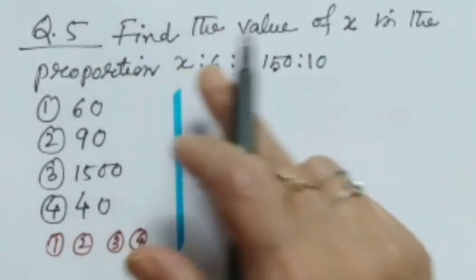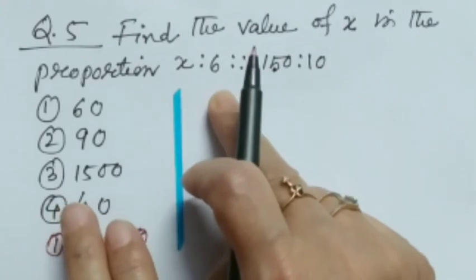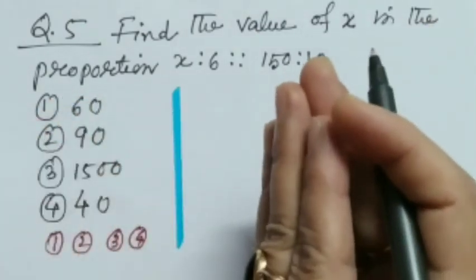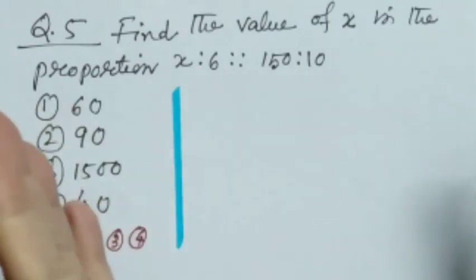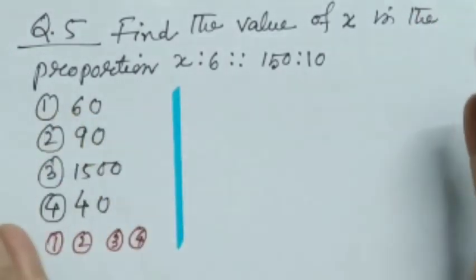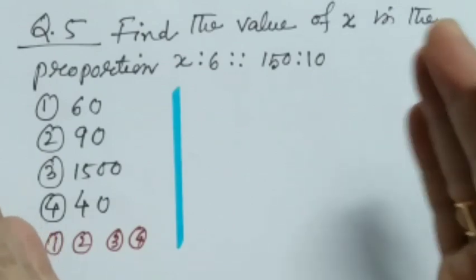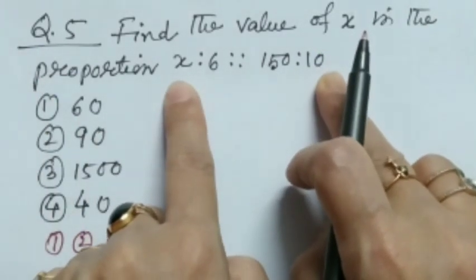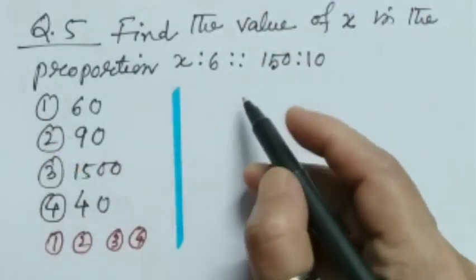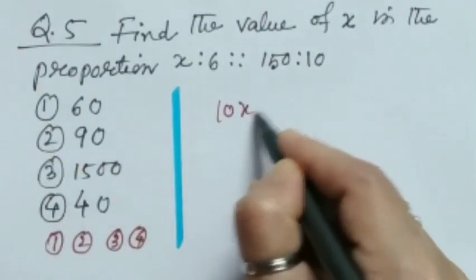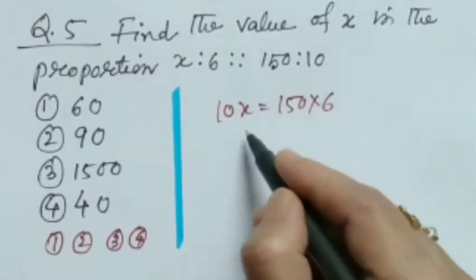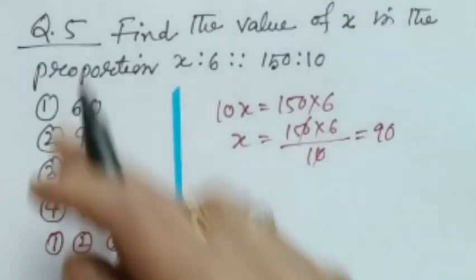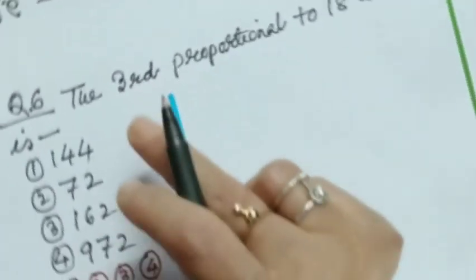Question number 5. Find the value of x in the proportion x is to 6 proportional to 150 is to 10. Yes, exactly. Product of extremes is equal to product of means. Here extremes means last term and first term. So 10x is equal to 150 into 6. That means x is equal to 150 into 6 by 10. Pretty simple sum. This is 90. So 2 is the answer. I'm bubbling 2.